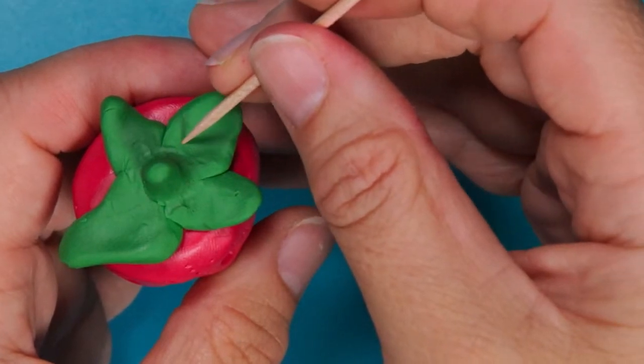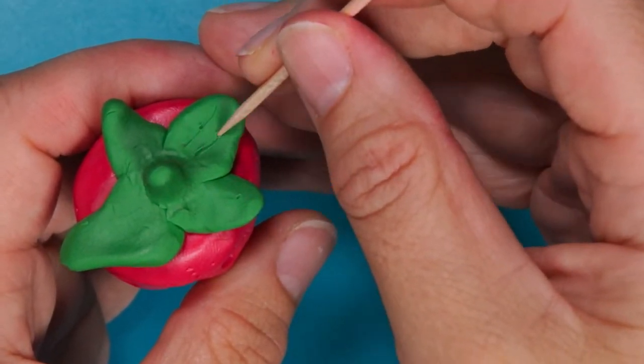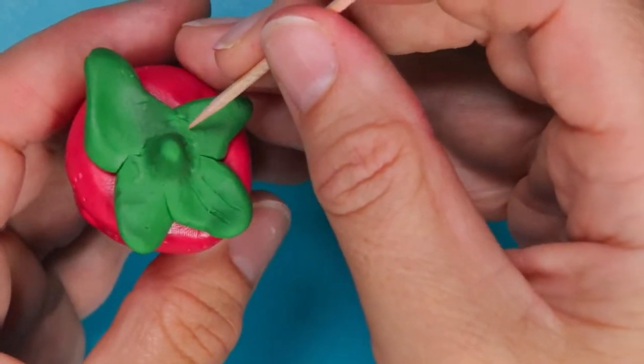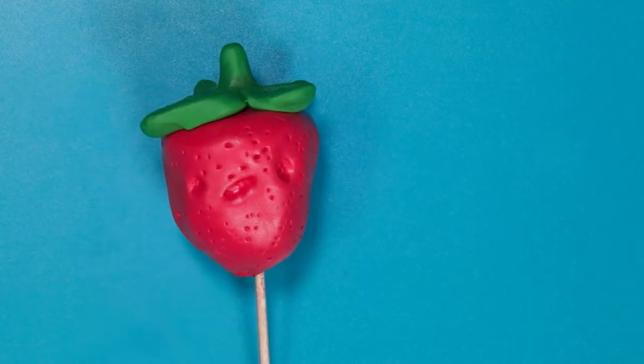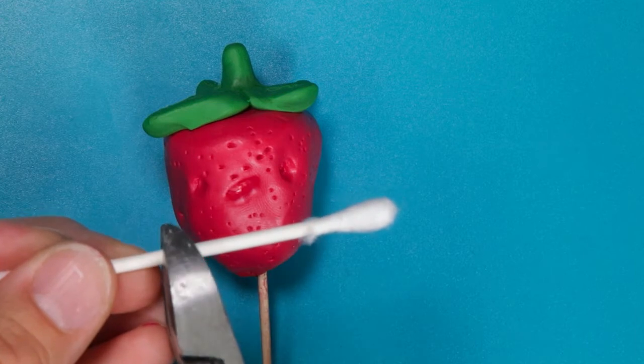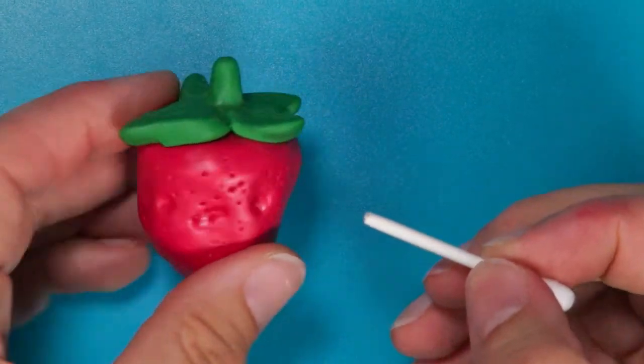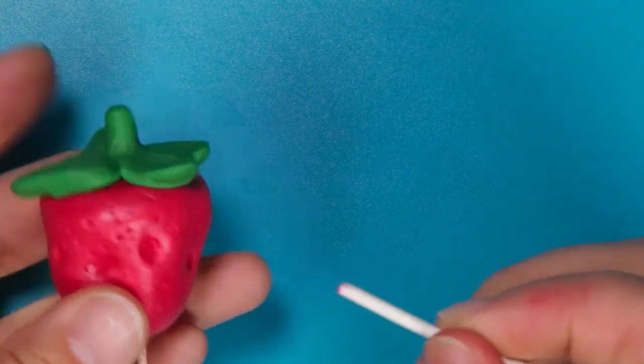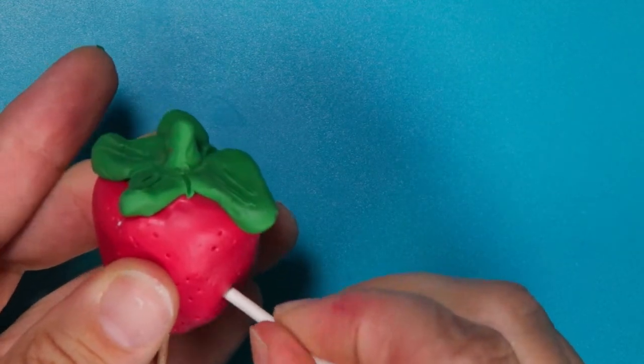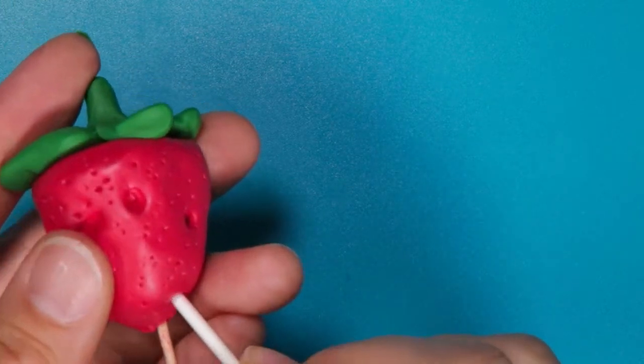You can also add a little bit of leaf detail using one of your toothpicks. I like to do this on all of my leaves. Once your strawberry's looking good, take a Q-tip and cut it in half. These will be our arms and legs. For now, take that cut toothpick and make holes for where your arms will be and your legs.